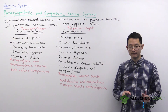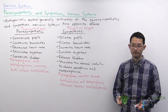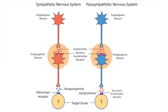A last important distinction between the parasympathetic and sympathetic nervous systems are the neurotransmitters involved. Both systems involve a preganglionic and a postganglionic neuron. The preganglionic neuron synapses on the postganglionic neuron, which then synapses on the effector organs. In the parasympathetic nervous system, both the preganglionic and postganglionic neurons use acetylcholine as the neurotransmitter. In the sympathetic nervous system, the preganglionic neuron uses acetylcholine, but the postganglionic neuron secretes norepinephrine.